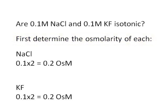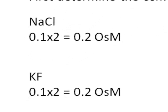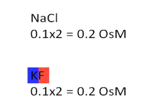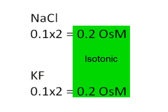So from the molarity of 0.1 NaCl, you multiply the molarity 0.1 times the number of ions in the formula, which is 2, you get 0.2 osmolar for sodium chloride. And the same is for potassium fluoride, 0.1 molar times the two ions in the formula. And we see that the osmolarities of both solutions are equal, therefore these two solutions are isotonic to each other.